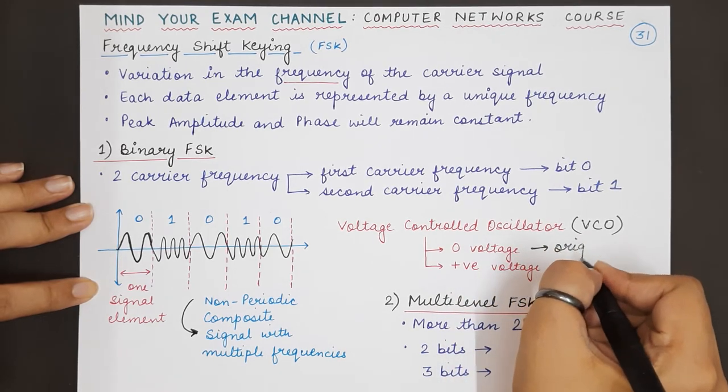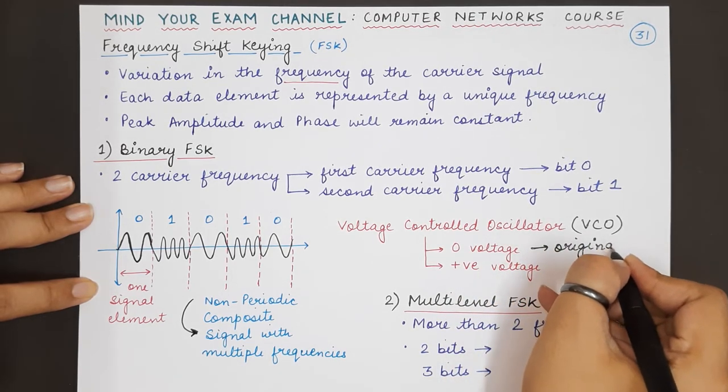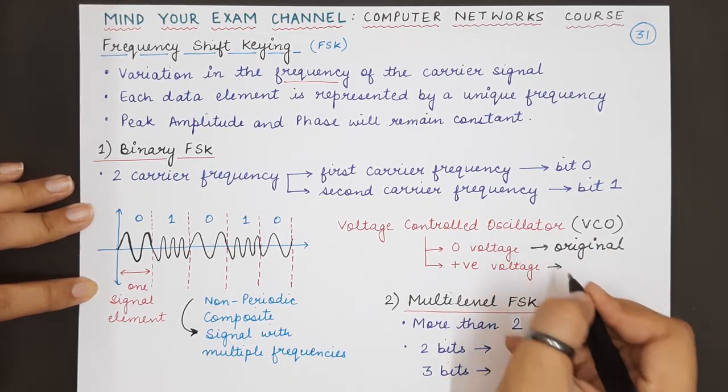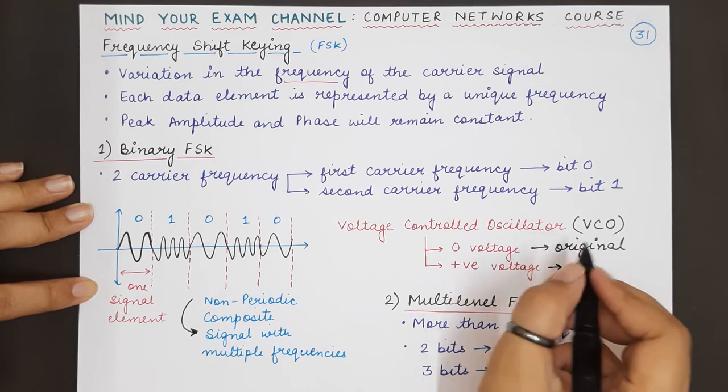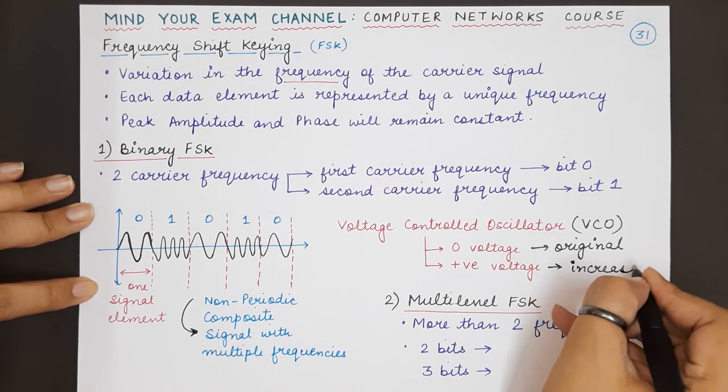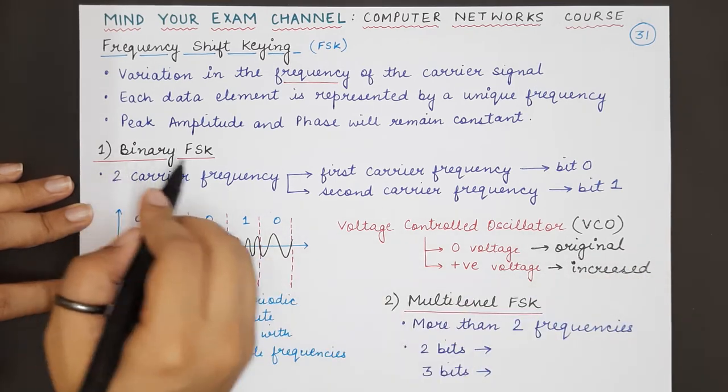Whenever a positive voltage or bit 1 has to be represented, the frequency of the oscillator is increased. This is one of the methods of performing binary FSK.